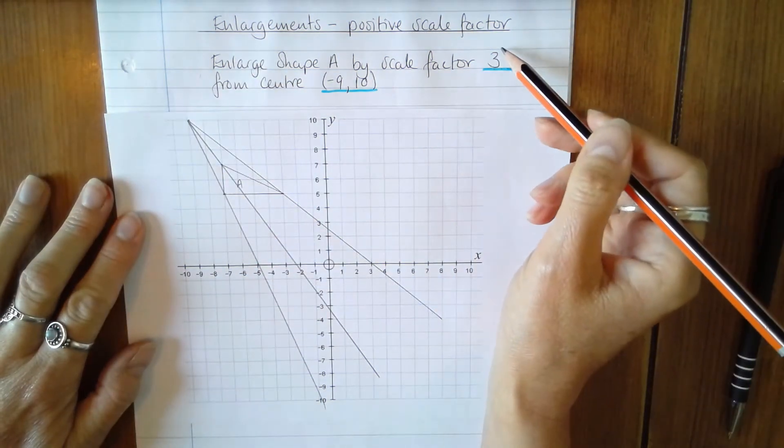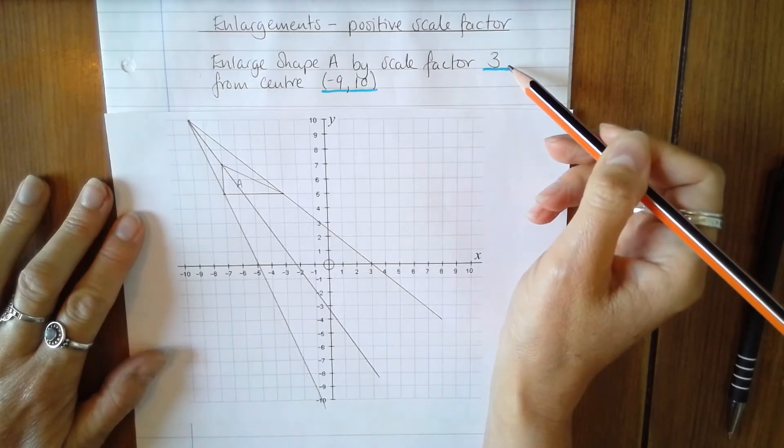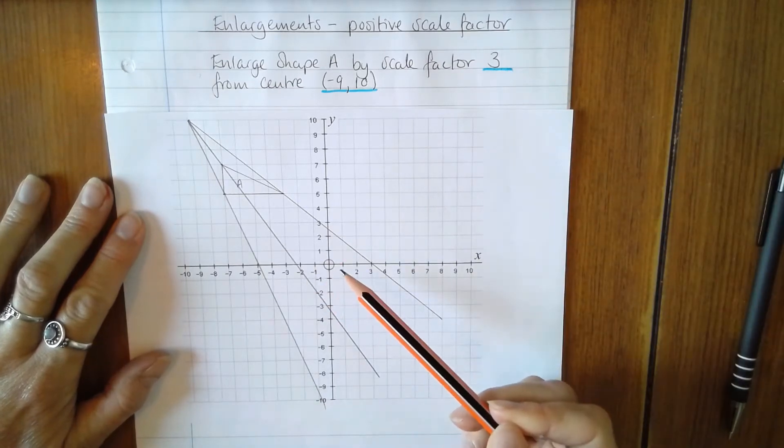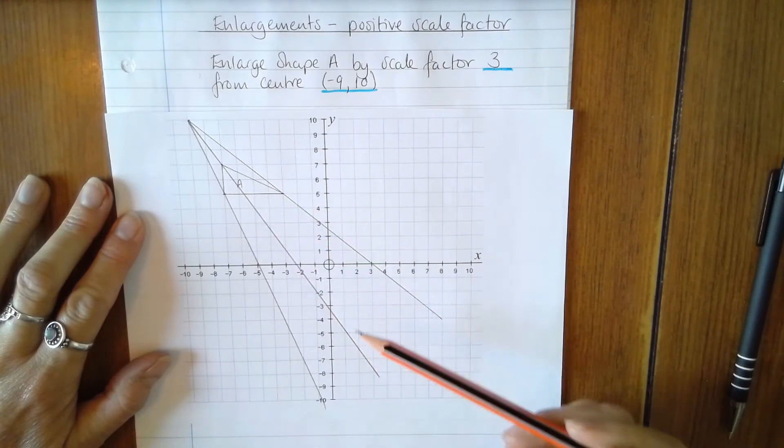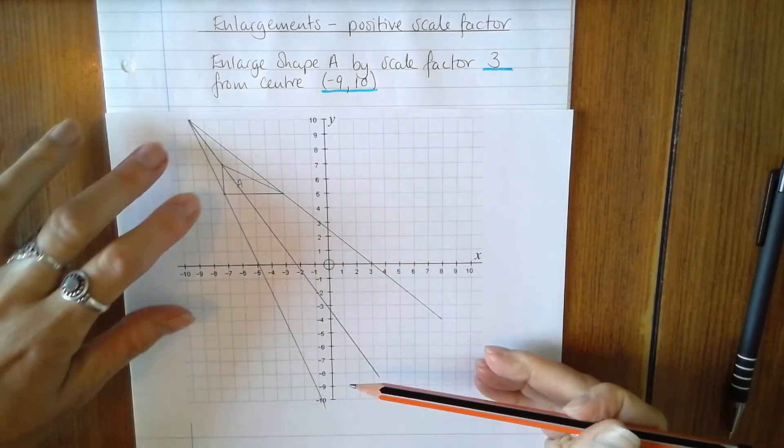The question asks us to enlarge by scale factor of three. That means the new shape must be three times the size of the original shape and three times the distance from the center.